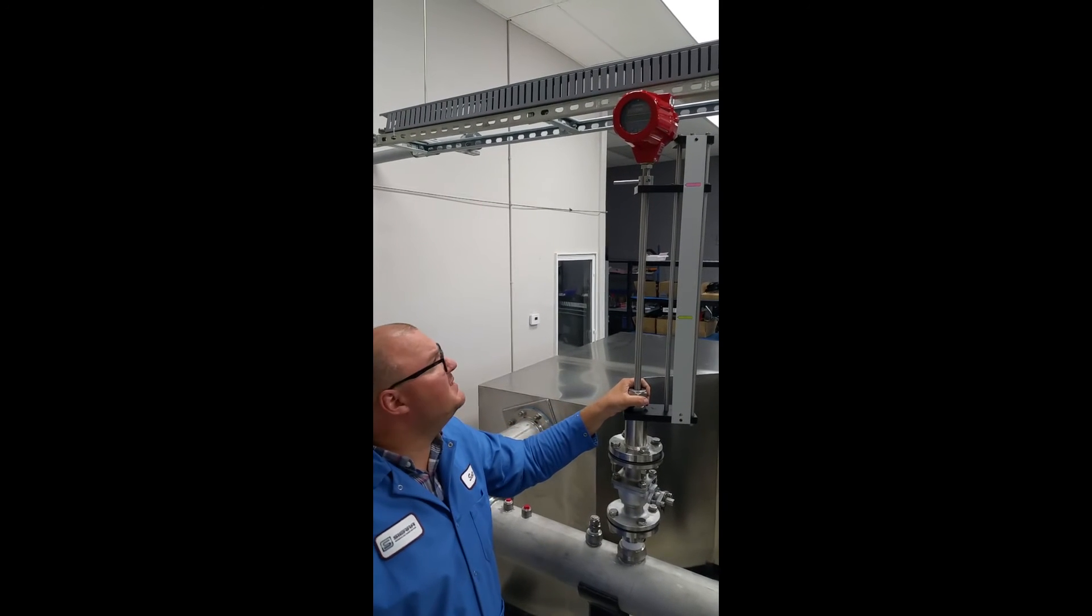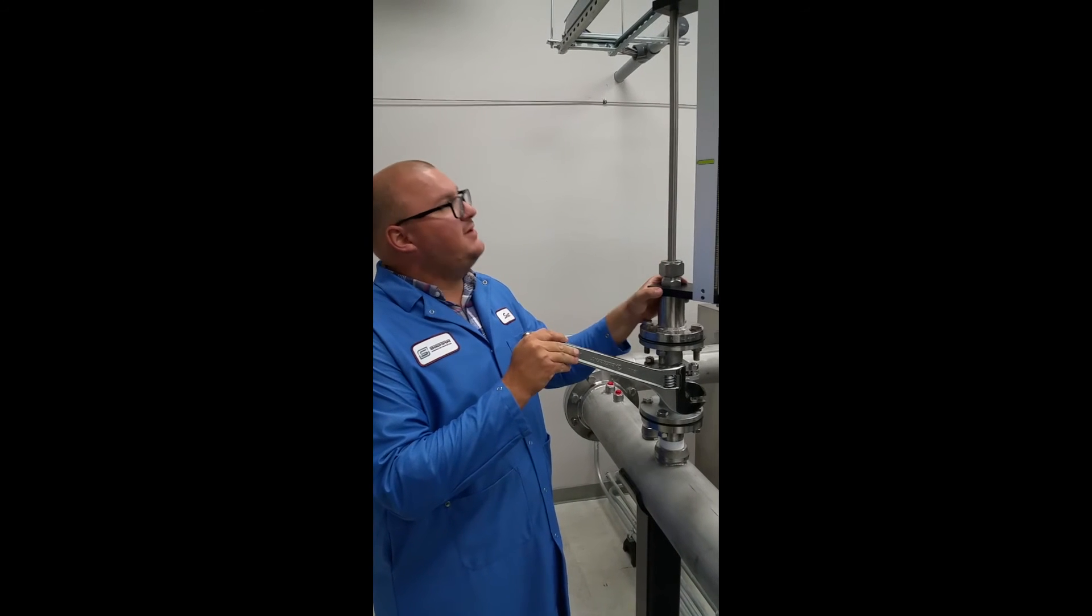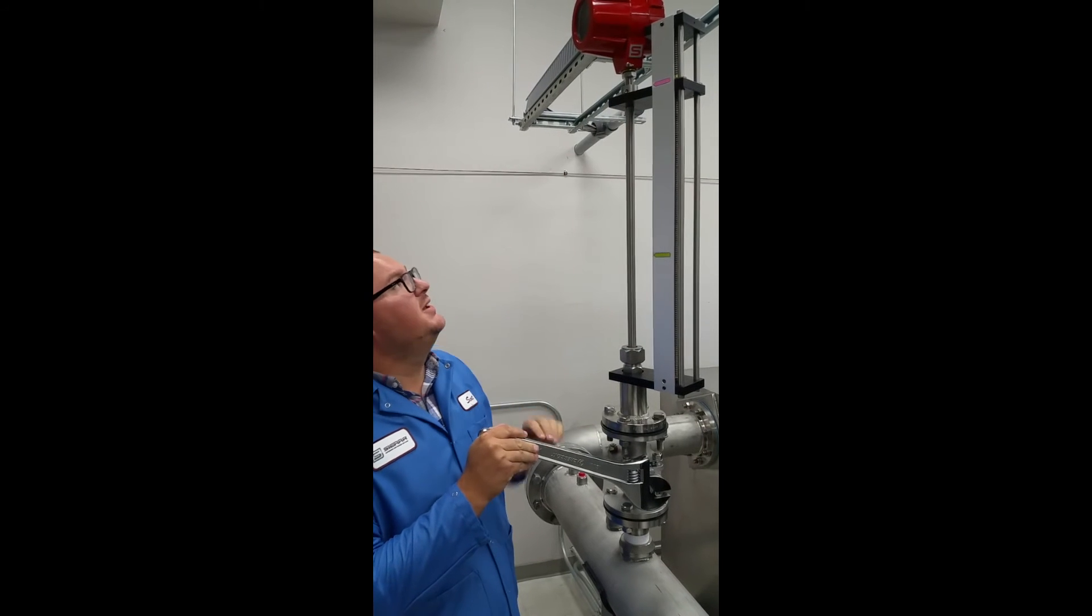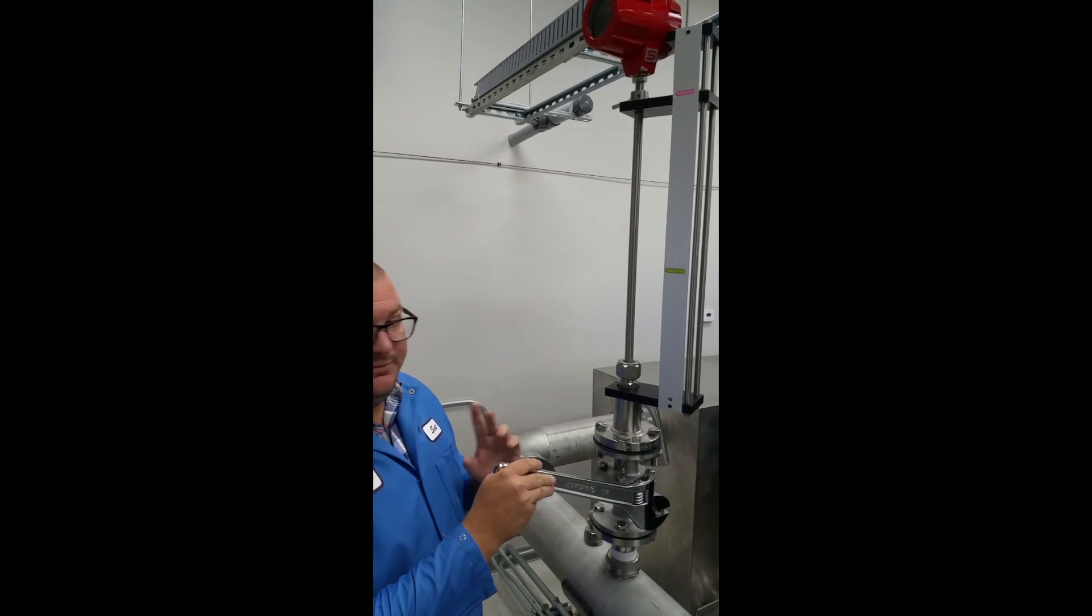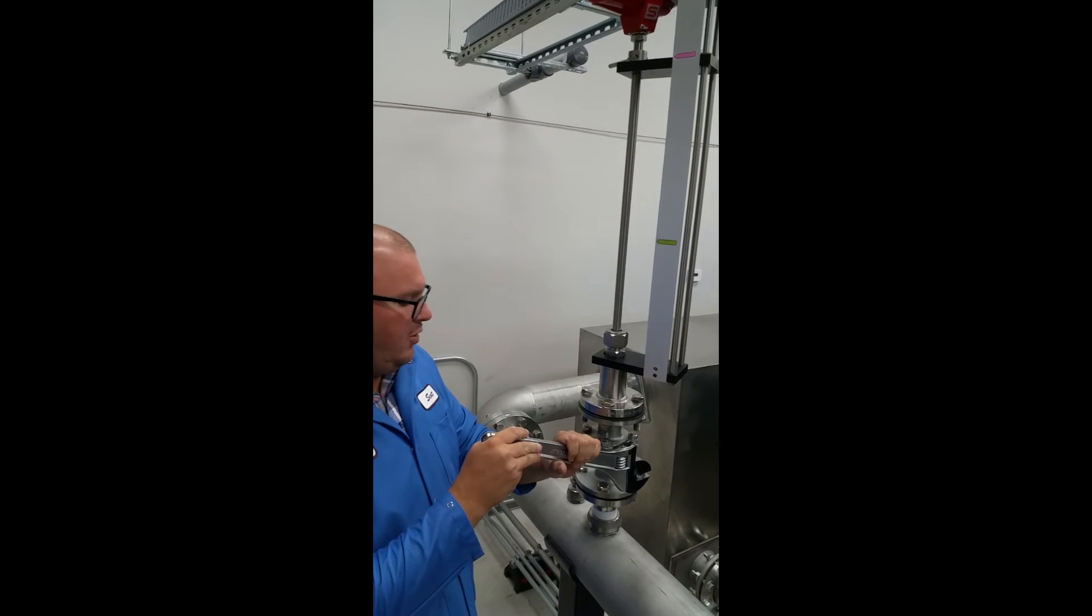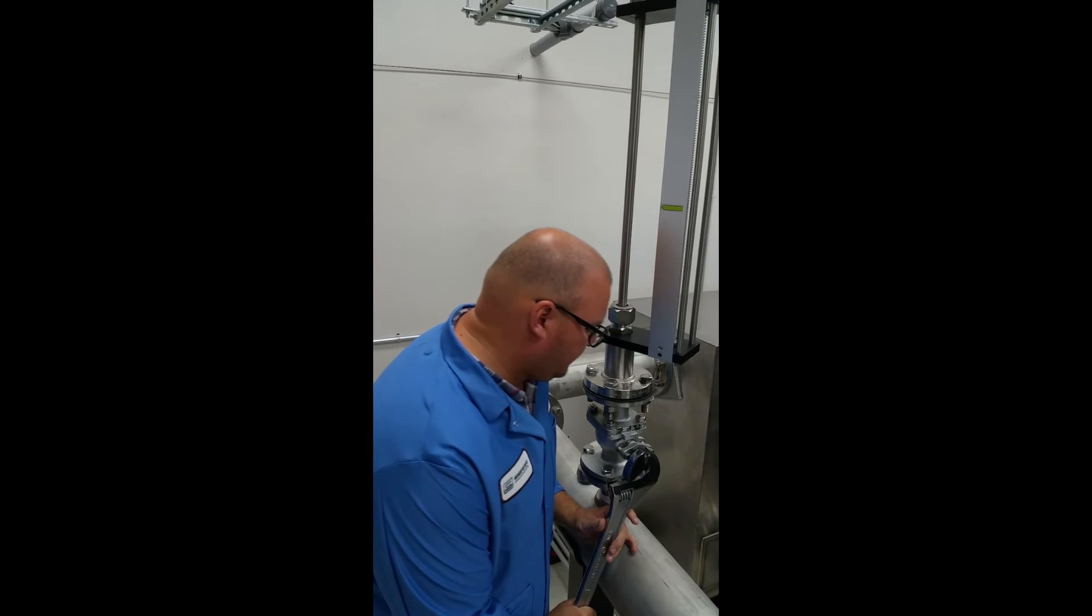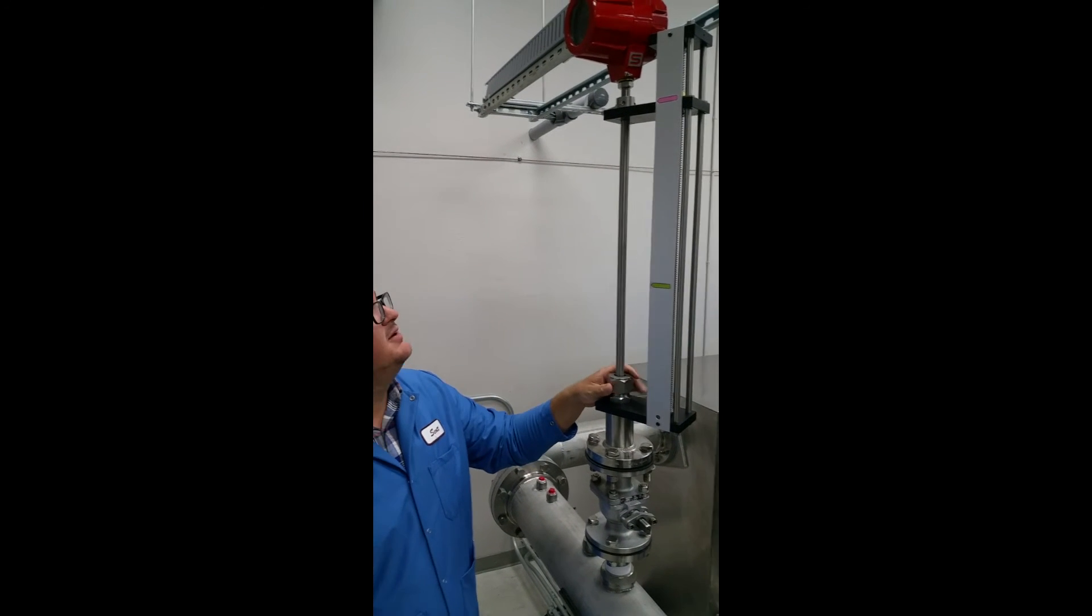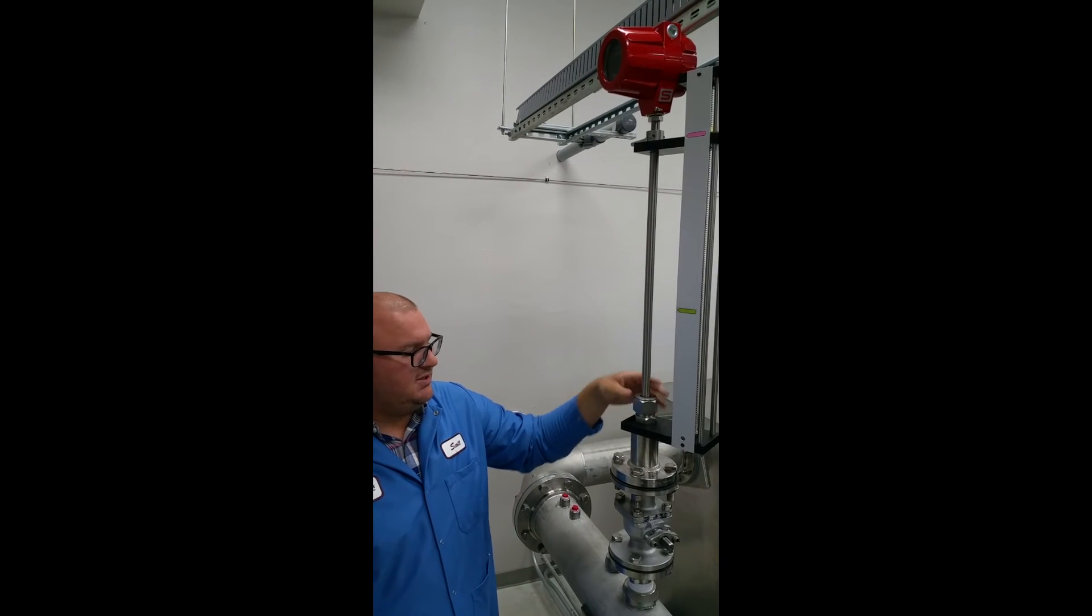My isolation valve is closed. Right now, this packing gland is tightened. It's hand tightened. Now my retractor is secured. I've checked my flow pointer to make sure it's in the right direction. I'm ready to insert this probe into the pipe. First step is going to be to open my isolation valve. Open this up. Next, I'm going to loosen the nut on the packing gland here to ensure that the probe can move easily up and down. You want to do this slowly.